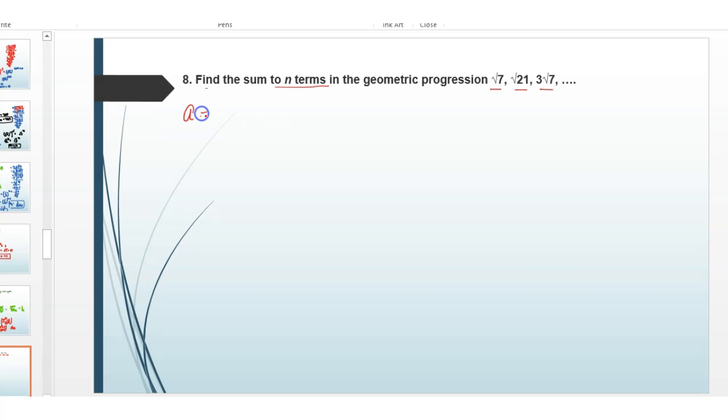So first of all we write here first term is root 7. Common ratio find karni hai. To find common ratio, we divide second term by first term. Second term is root 21 upon first term is root 7. This is a1 first term, this is a2 second term and this is a3 third term.